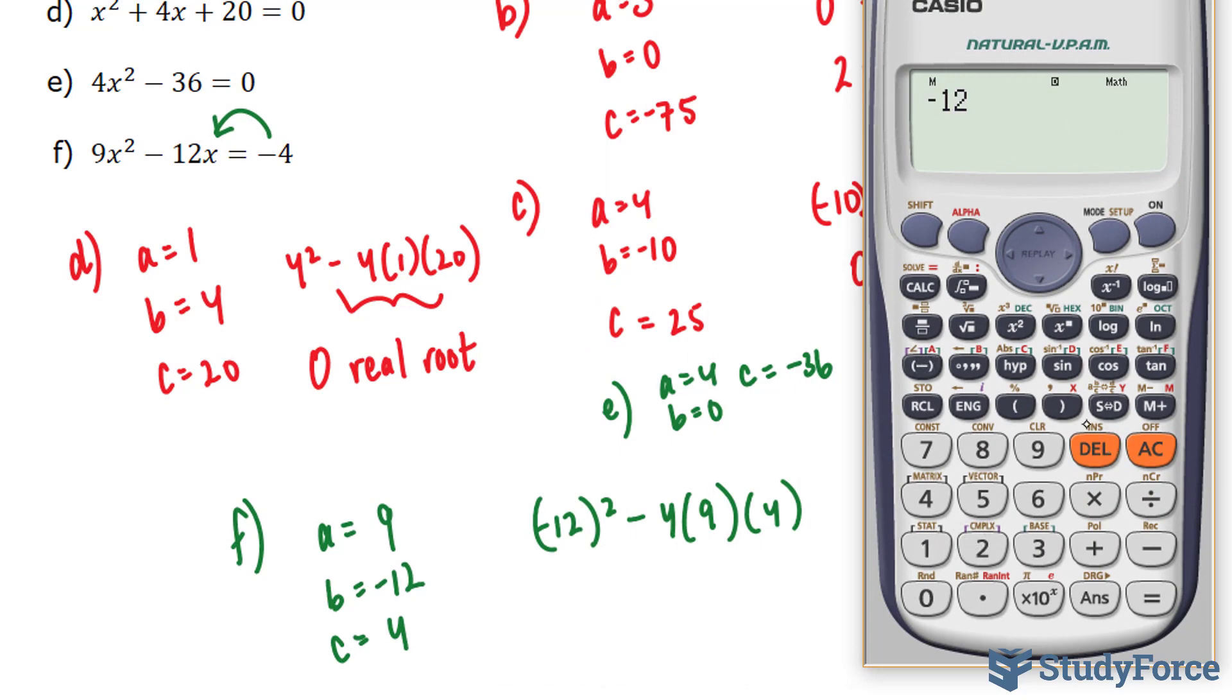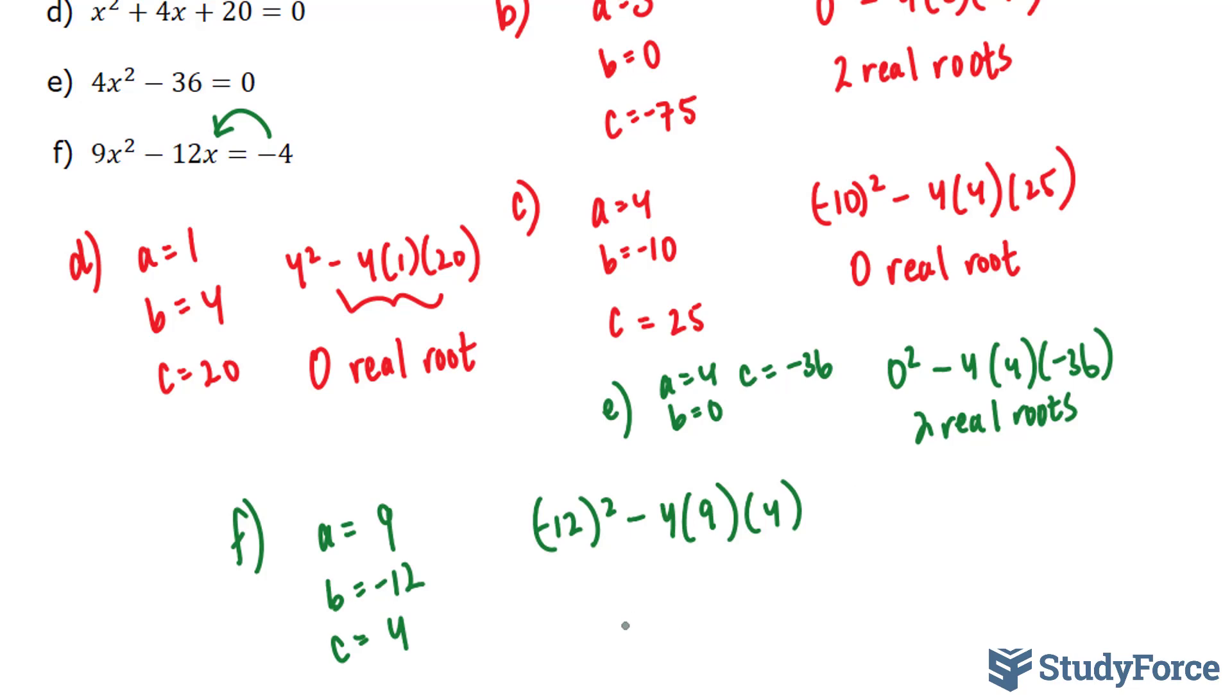Negative 12, and make sure that this is in brackets, to the power of 2 minus 4 bracket 9 bracket 4, and we end up with zero. I was right. It was a close one. So this is equal to zero. Therefore, we will have one real root. I'm going to highlight all my solutions.